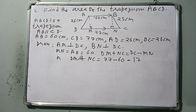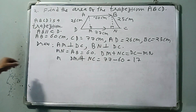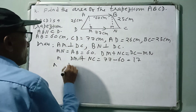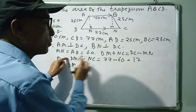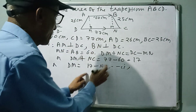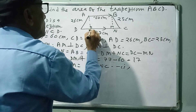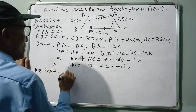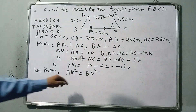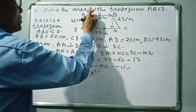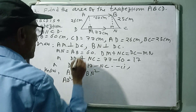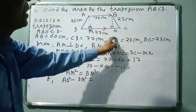Since DM and NC are both unknown, we apply the Pythagoras theorem. Let DM = 17 − NC. Since ABNM is a rectangle, AM = BN. In right triangle AMD: AM² = AD² − DM². In right triangle BNC: BN² = BC² − NC².